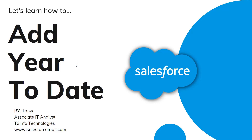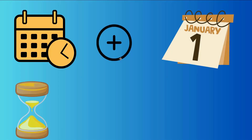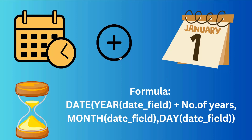Hello everyone, welcome to the channel. Today in this video we are going to learn how to add a year to a date in Salesforce, and we are going to discuss this concept for both Salesforce Lightning as well as Classic edition. To add a specific number of years to a date, we are going to use two Salesforce functions: the DATE function and the YEAR function, and by using these two functions we will create a formula.